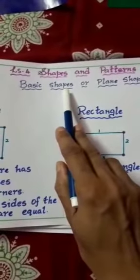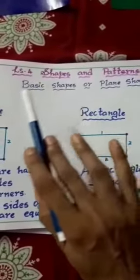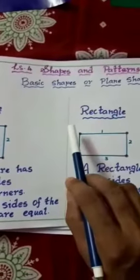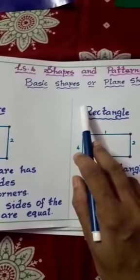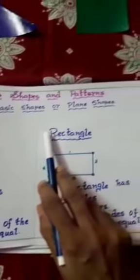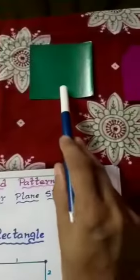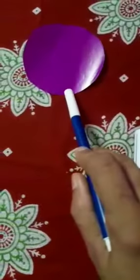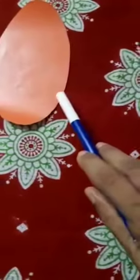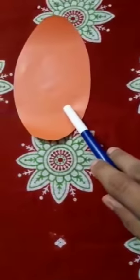Basic shapes are called flat shapes. They have length and breadth only, and no thickness. The basic shapes are: square, rectangle, triangle, circle, and oval. These are all called basic shapes.